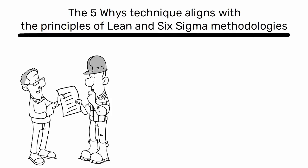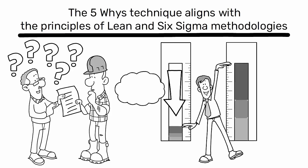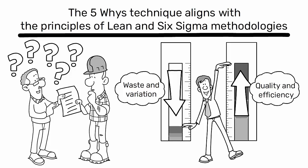Finally, the 5-WISE technique aligns with the principles of Lean and Six Sigma methodologies, which many industrial engineers use. It supports the goal of reducing waste and variation in processes, leading to higher quality and efficiency.